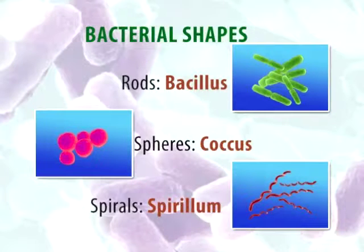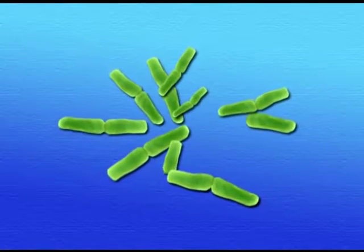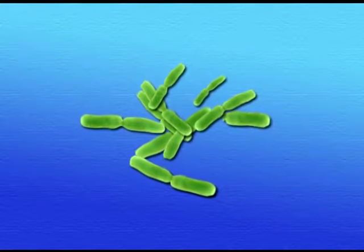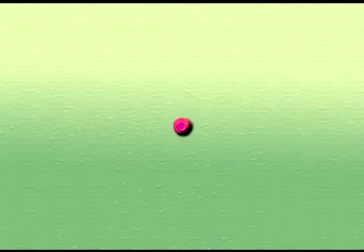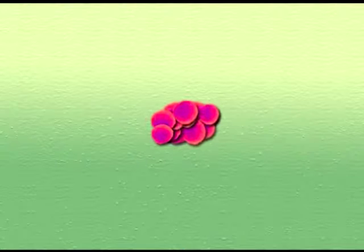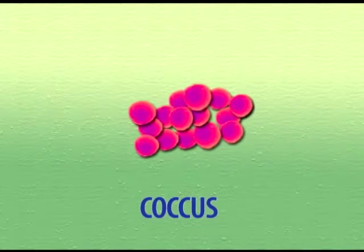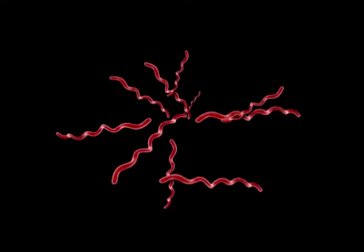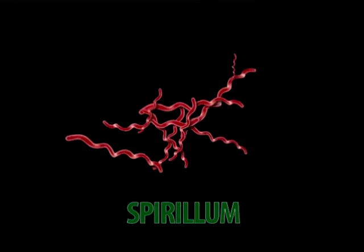Keeping in view their small volume, bacteria fall into three principal shapes: the rods, also called bacilli; the spheres, also called cocci; and spirals, sometimes referred to as spirillum-type bacteria.